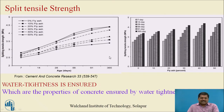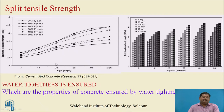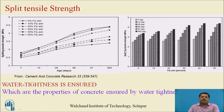Split tensile strength is the third strength parameter for concrete. The line for concrete without fly ash (only cement) shows lower gain. As the percentage of fly ash increases, strength gain is higher, and with higher fly ash percentage, strength gain continues after 28 days — this is the actual additional advantage of high volume fly ash concrete. The bar chart (x-axis: fly ash percentage, y-axis: split tensile strength) confirms the same trend.